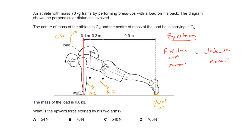The weight of the athlete is 700 newtons and the weight of the load (mass 6 kg) is 60 newtons. The moment is calculated as force multiplied by distance. The moment due to the weight of the athlete is 700 multiplied by the perpendicular distance from the pivot, which is 0.9, so 700 × 0.9.